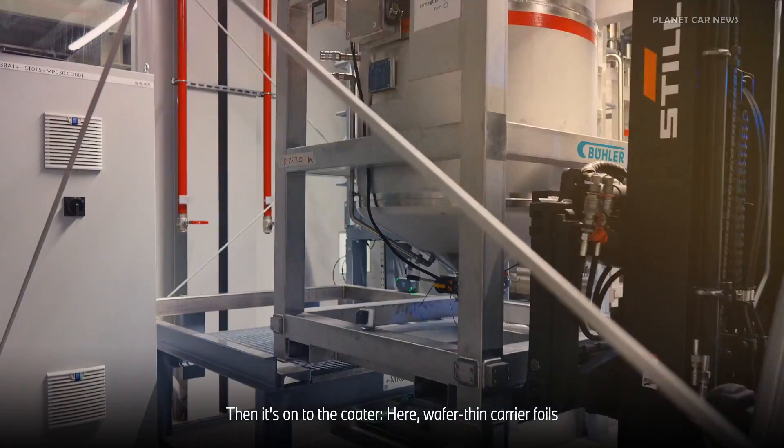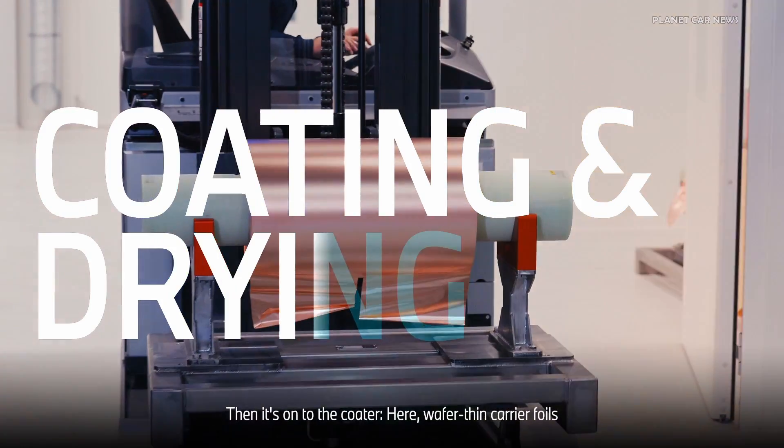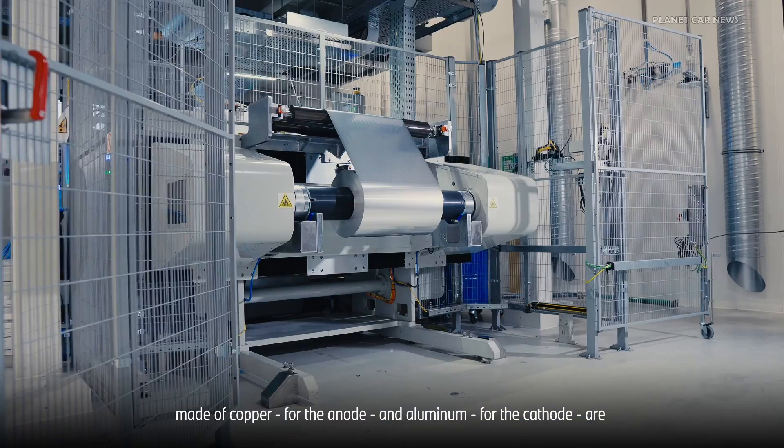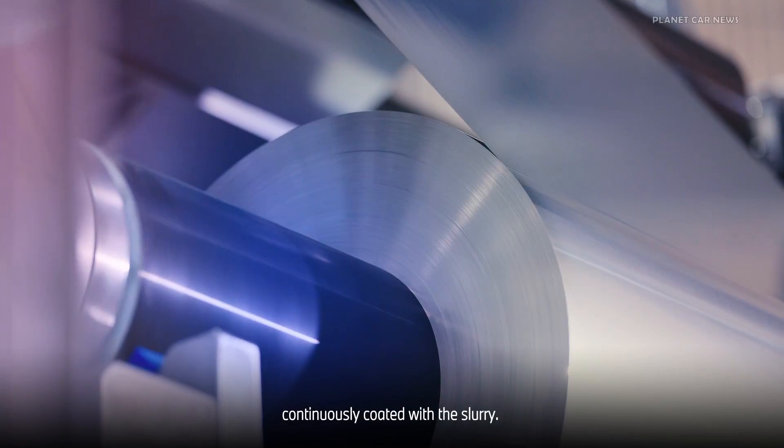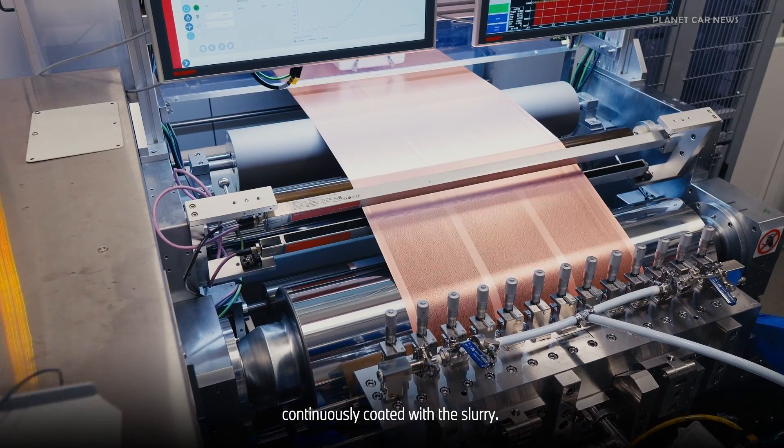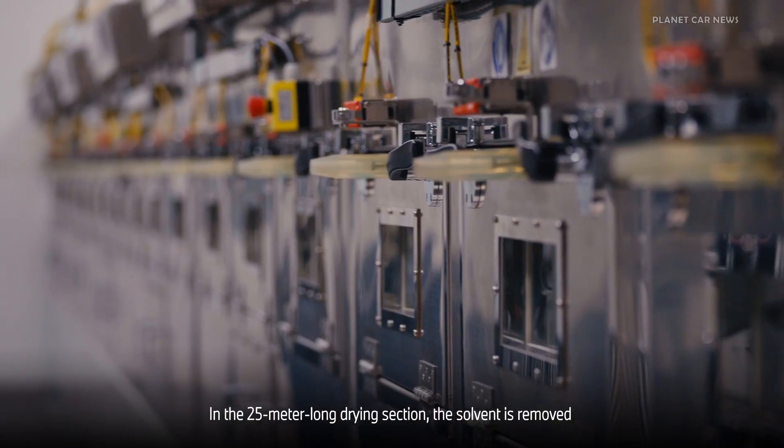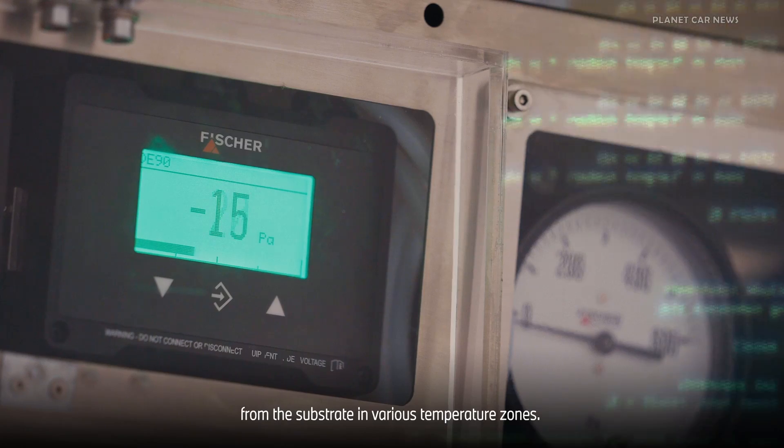Then it's on to the coater. Here, wafer-thin carrier foils made of copper for the anode and aluminum for the cathode are continuously coated with the slurry. In the 25-meter-long drying section, the solvent is removed from the substrate in various temperature zones.